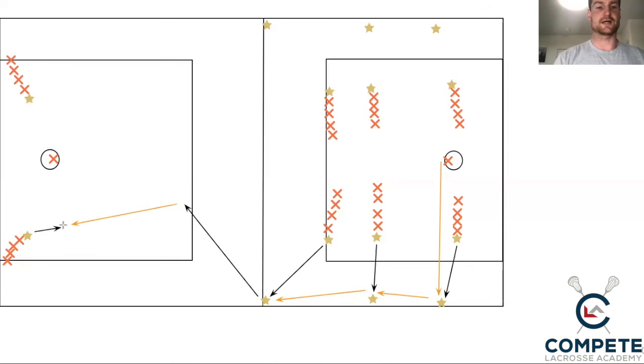And really we've got two options. So this attack man can catch and shoot or they can catch and pass back. So they can catch this and just shoot it right on cage, or they can pass it back to that midfielder for them to shoot.